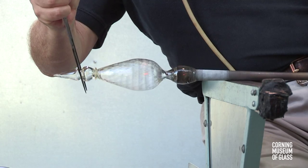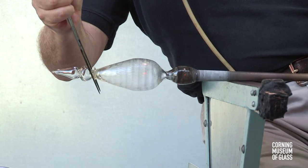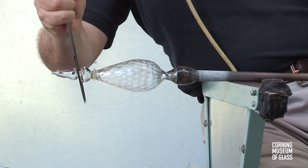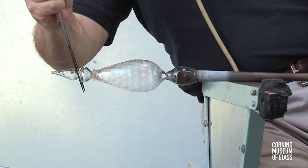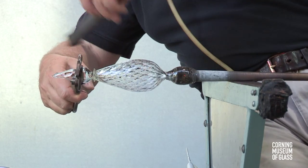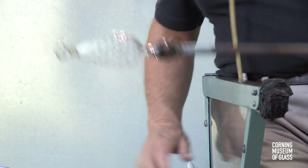This is done by making a constriction, tooling the upper part of the knop, and then breaking free the excess glass.